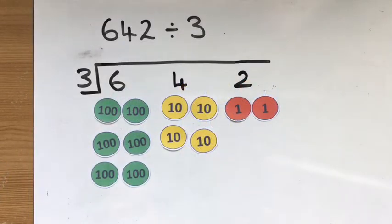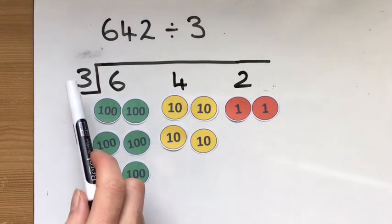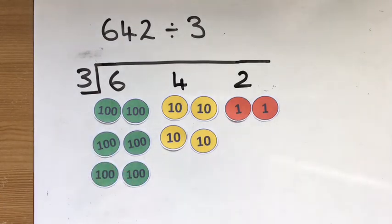Our last one is division. 642 divided by 3. I've got my 600, my 40, and my 2 divided by 3. So we're sharing it into 3 equal groups this time.